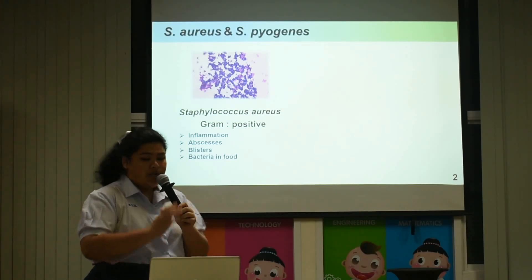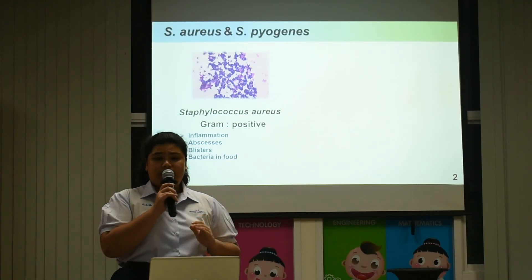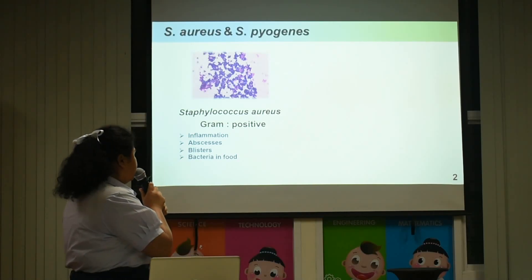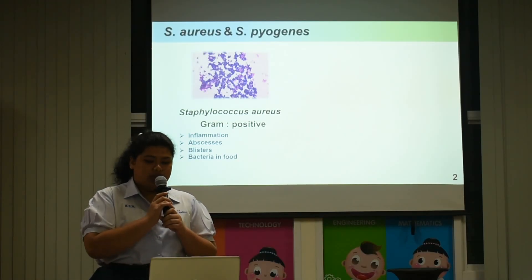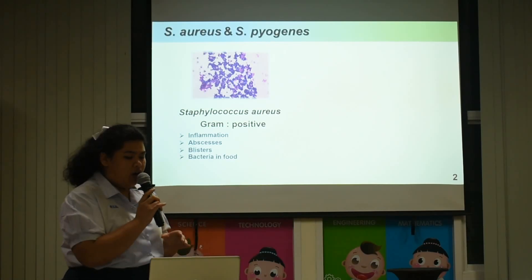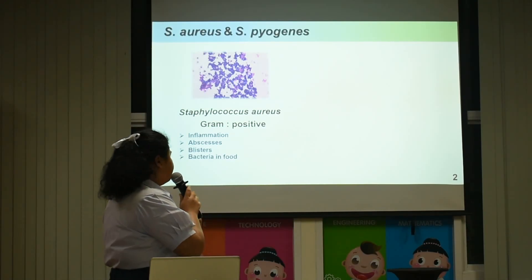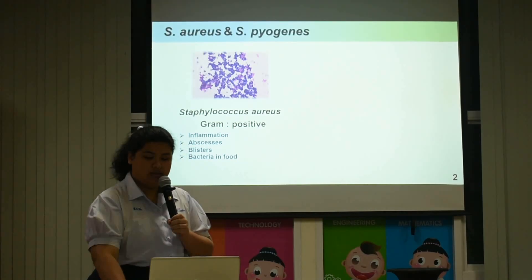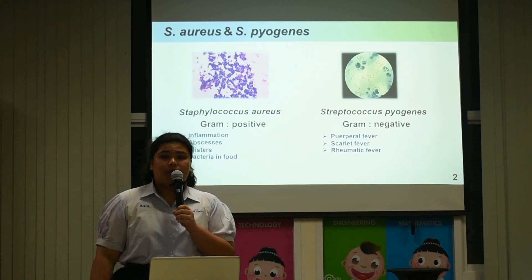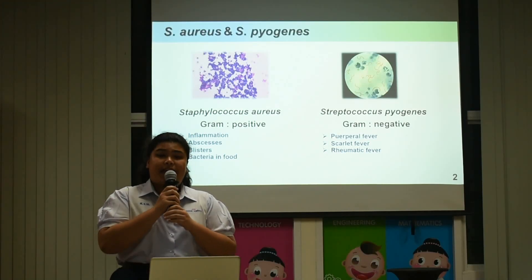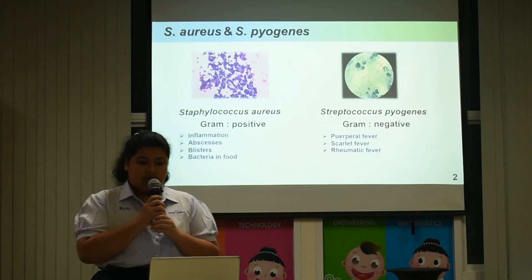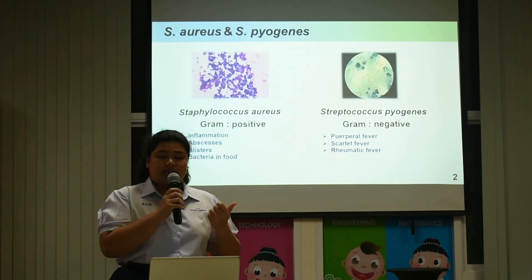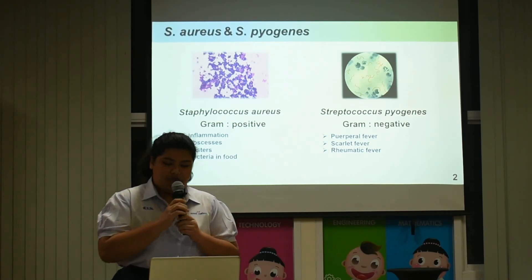Staphylococcus Aureus and Staphylococcus Pyogenes are the bacteria featured in my project. Staphylococcus Aureus is gram-positive and causes inflammation, abscesses, blisters, and foodborne illness. Staphylococcus Pyogenes is gram-negative and causes puerperal fever, scarlet fever, and rheumatic fever.